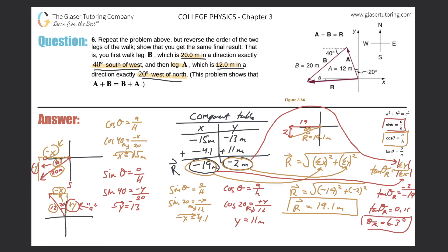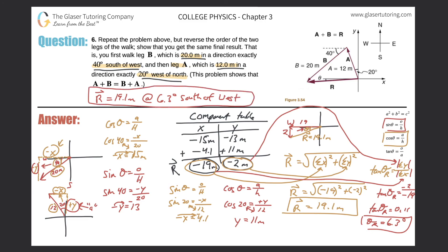Now we just have to state where this degree measure is relative to. It's relative to the west direction. So the resultant vector is 19.1 meters at 6.3 degrees south of west. That fully describes the resultant vector, giving both magnitude and direction. If you check number five, it's the same answer, which is exactly what the question asks us to show.